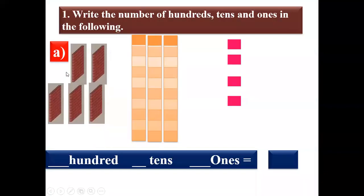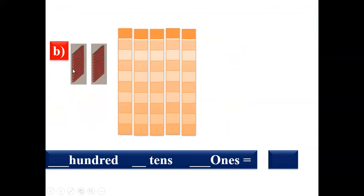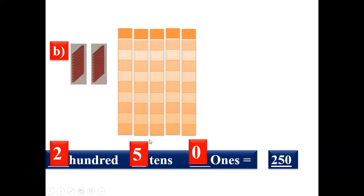Now we are going to solve an exercise. The question is: write the number of hundreds, tens and ones in the following. Look at the first one — count: one, two, three, four, five — five hundreds. One, two, three — three tens. And ones: one, two, three, four — four ones. So the answer is five hundred and thirty-four. Now look at the second one — only two hundreds. Tens: one, two, three, four, five — five. And ones: zero. So the answer is two hundred and fifty.